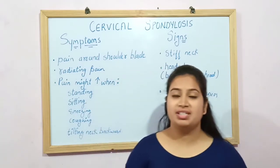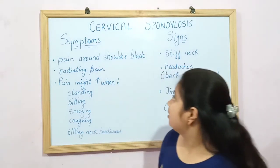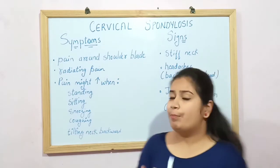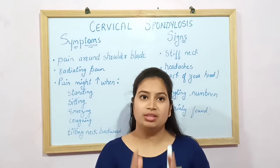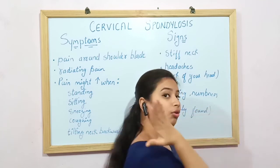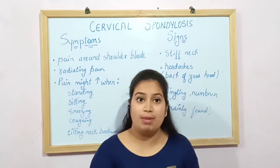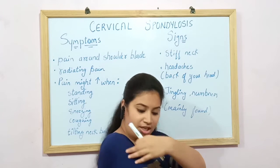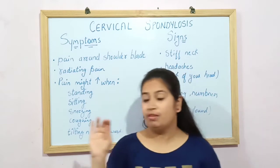Now let's move on to the signs and symptoms of cervical spondylosis. The first symptom is pain around the shoulder blade — the scapula. You will have pain over the scapula bone, over the trapezius, and over the neck. The pain can radiate to the shoulder, and in severe cases, all the way down to the elbow, forearm, and fingers.